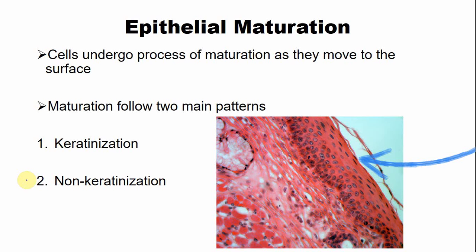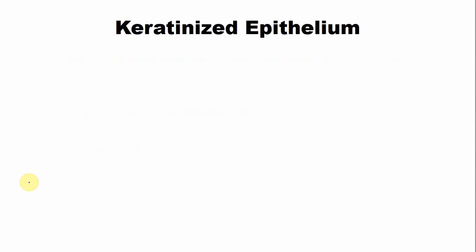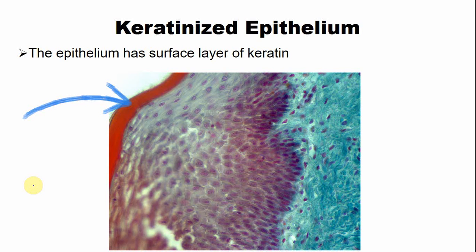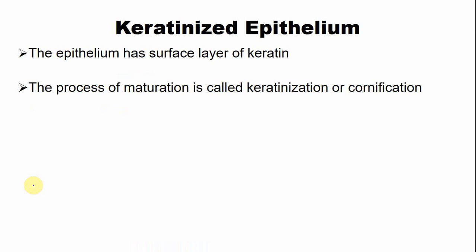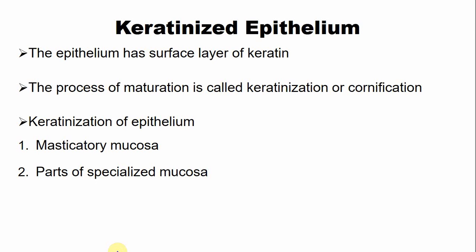The maturation follows two main patterns: keratinization or non-keratinization. The keratinized epithelium has a surface layer of a protein known as keratin — the cells of the surface layer are filled with keratin. This process of maturation is also known as cornification. Keratinization occurs in the region of the masticatory mucosa, which is present on the hard palate and the gingiva, and is also seen in some parts of the specialized mucosa, present on the dorsal surface of the tongue.